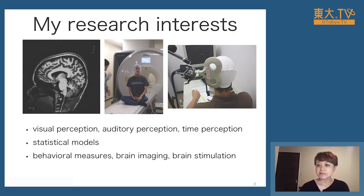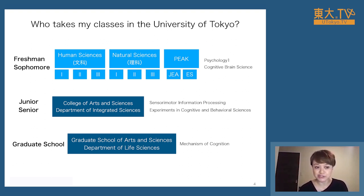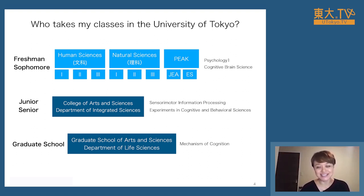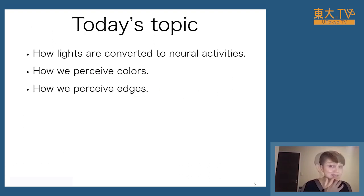Who takes my classes at the University of Tokyo? It's pretty much anyone. We have a complicated department system, but for freshman and sophomore year there's a Human Science Division and a Natural Science Division. There's also a program in English at Komaba, so pretty much anyone can take my psychology class and then go on to brain sciences. That's probably why I was asked to give this lecture — there's no prerequisite to understand it.